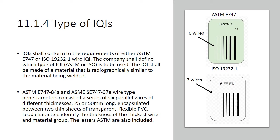There are two types of wire IQIs you can use: ASTM E747 or ISO 19232-1. These wires must be made of material that is radiographically similar to the material being welded — for example, stainless steel wires for stainless steel welds. The difference between the two types is that the ISO (European standard) has seven wires, while the ASTM has six parallel wires. This is what they look like when seen in the field.